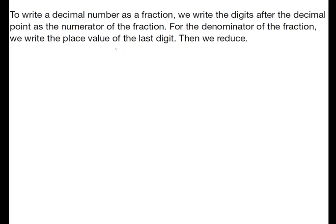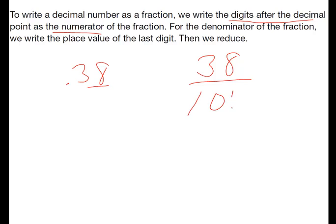To write a decimal number as a fraction, we write the digits after the decimal point as the numerator of the fraction. So if we have 0.38, we write the digits after the decimal as a numerator. For the denominator, we write the place value of the last digit, which is hundreds, and then we'd reduce. So 0.38 would be 38 over 100, which reduces to 19 over 50. That's how we do it. Let's get started.